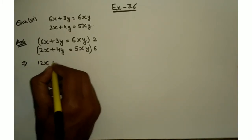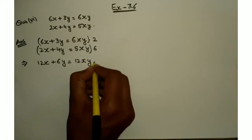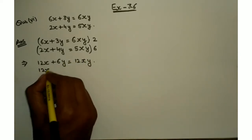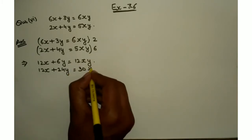This becomes 12x plus 6y equals 12xy, and 12x plus 24y equals 30xy.